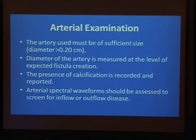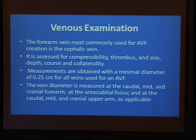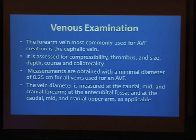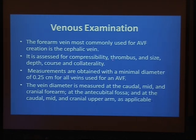We have to evaluate the upstroke of systolic waves and the systolic flow must be evaluated on spectral Doppler. For selection of the vein, the vein must be not less than 2.5 mm. We have to measure the caliber and diameter of the vein at the forearm, especially at the cephalic vein, and take multiple measurements to help the surgeon make the best choice. Any partial or complete thrombus must be evaluated and documented.